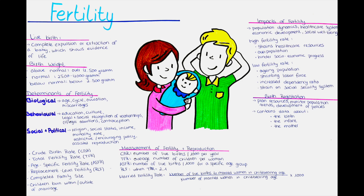Fertility and reproduction are critical components of human life and society. The ability to measure and understand fertility rates, reproductive characteristics, the terminology of live birth, gestational age, and the factors influencing fertility rates is essential for policymakers, healthcare professionals, and researchers. Let's begin this video with the most important terminology.